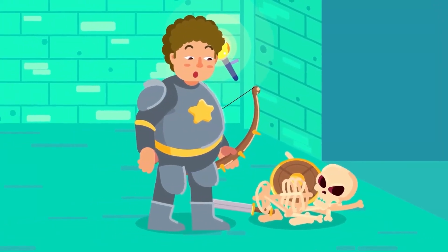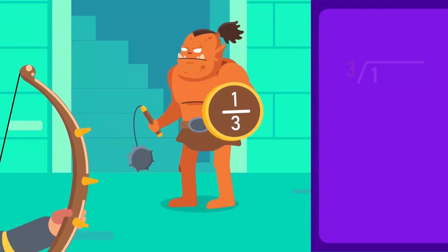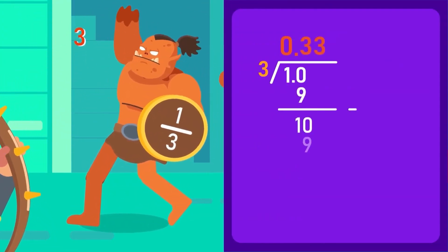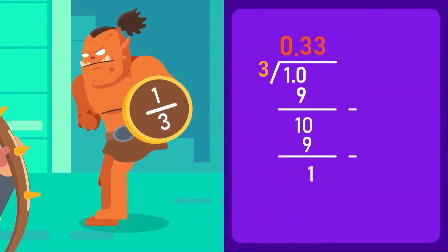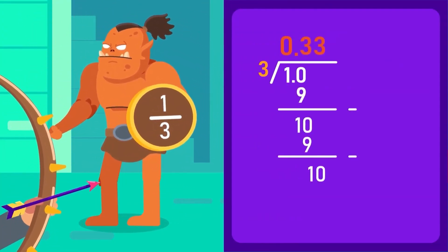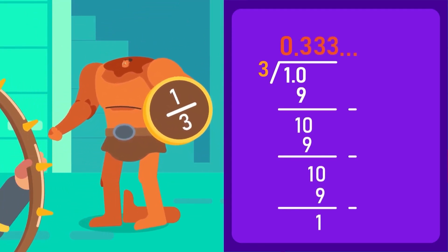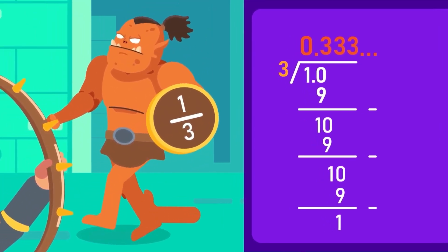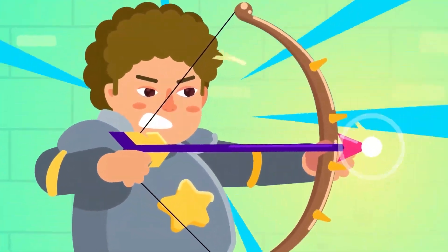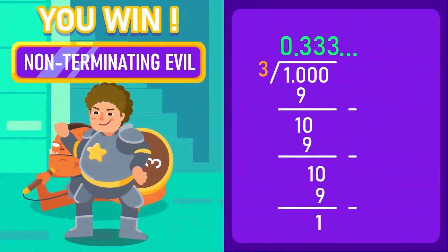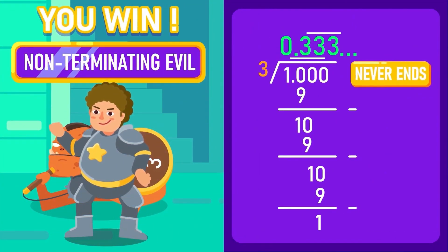Now let's take another number: 1 over 3. If we look at this example, the division never ends. The remainder again and again appears to be 1, and the quotient keeps on repeating as 0.33333 and so on. Therefore, a decimal number where the number of digits after the decimal point is infinite is called a non-terminating decimal number — a decimal number that never ends.